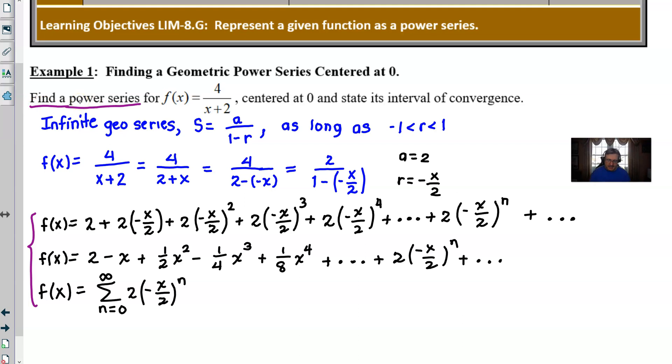Now it does ask to state the interval of convergence, which fortunately we don't have a lot to work on there. Because the interval of convergence, if you recall, is built upon the fact that your r value has to lie between negative 1 and positive 1. Now another way to think about that, if you remember, is that the absolute value of r is less than 1.